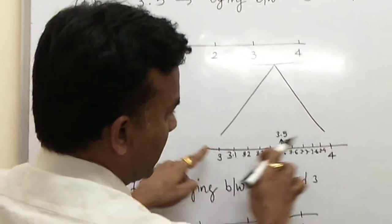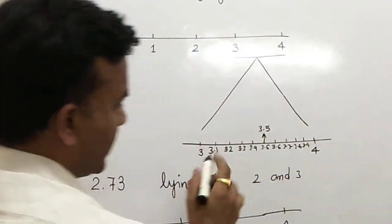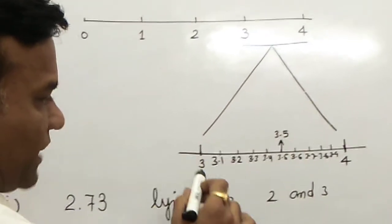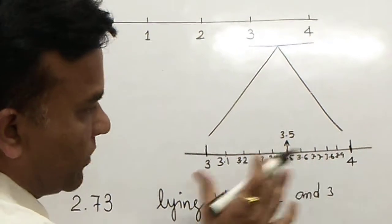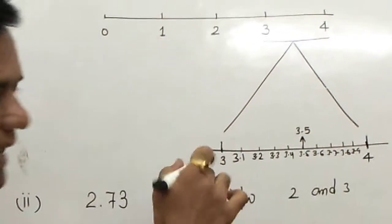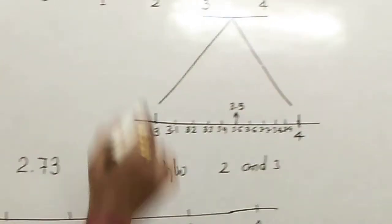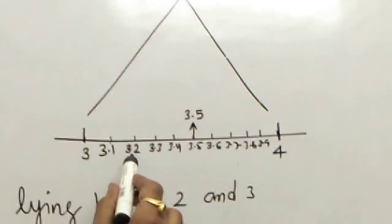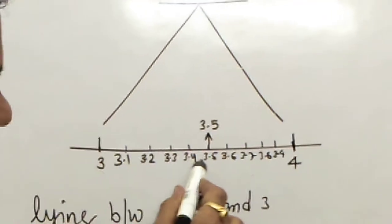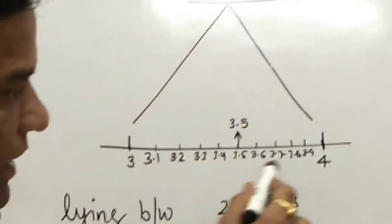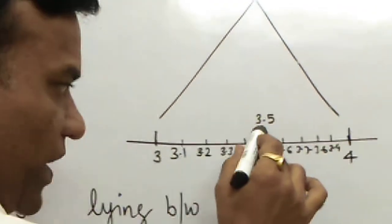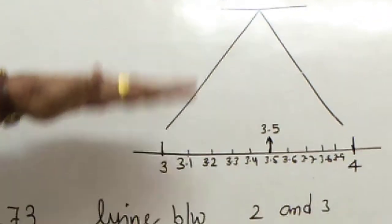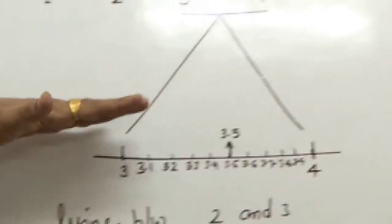Now we enlarge the section between 3 and 4, dividing it into 10 equal parts. We mark 3.1, 3.2, 3.3, 3.4, 3.5, and so on. So 3.5 is located here — we magnified only one time and got the result.